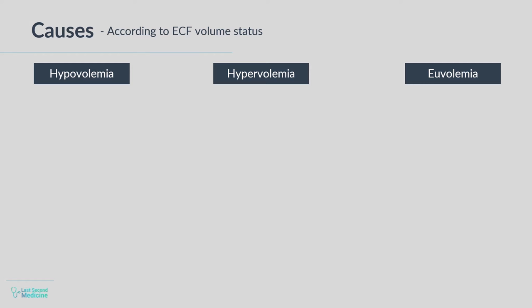A patient can have more than one status as well. For example, a hypervolemic patient due to congestive heart failure can become hypovolemic due to fluid losses through diuretic use or diarrhea. Whatever is the volume status of a patient, hyponatremia has occurred because there is more water relative to the sodium. Determining volume status will help us narrow down the differential of hyponatremia.